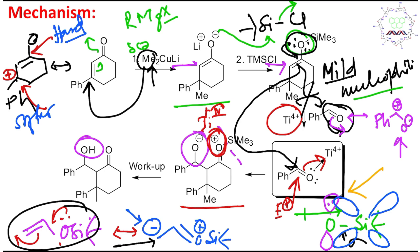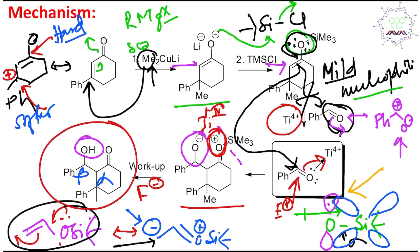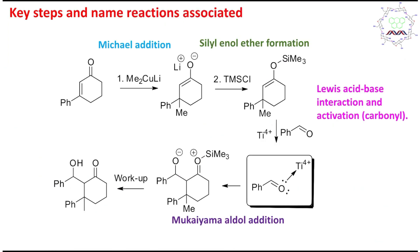After aqueous workup — using aqueous acid, aqueous base, or fluoride — the trimethylsilyl ether is hydrolyzed, the O⁻ is converted to OH, and the silicon-oxygen bond breaks. This ultimately produces a beta-hydroxy carbonyl compound — an alpha-beta hydroxy carbonyl. This is analogous to an aldol condensation, and its name is the Mukaiyama aldol condensation.